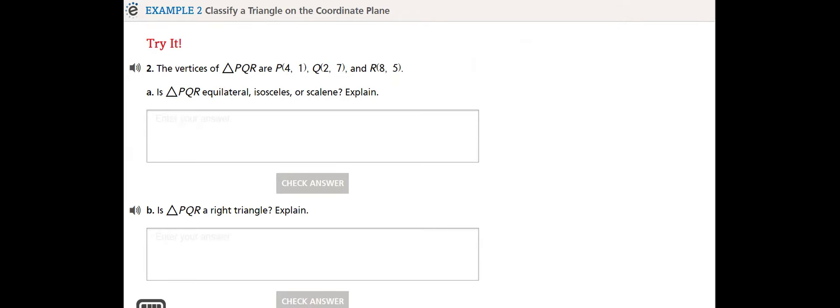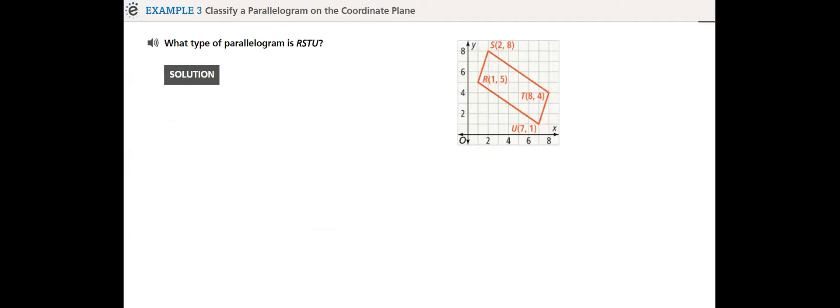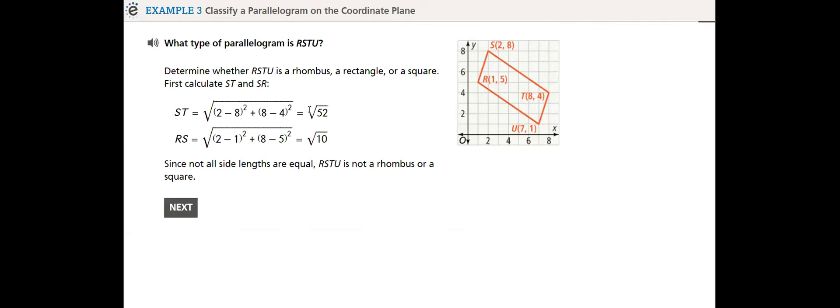In Example 3, we are classifying a parallelogram on the coordinate plane. What type of parallelogram is RSTU? We already took that in Chapter 6: parallelograms are also rectangles, squares, rhombuses. We took that in detail before. Now we are connecting it to the coordinate plane.